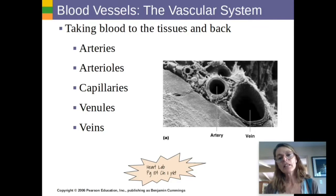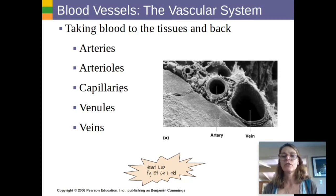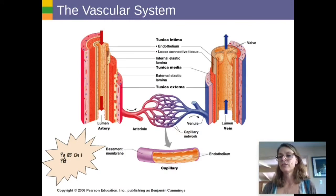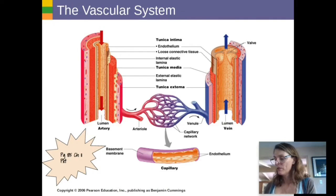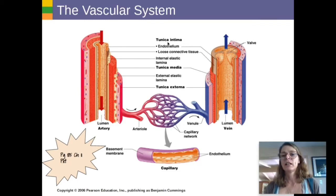A smaller vein is called a venule. Blood going away from large arteries branches into smaller and smaller branches called arterioles. On page 185 in your packet, you have to label the three different types of vessels. This diagram shows the important differences between arteries, veins, and capillaries.